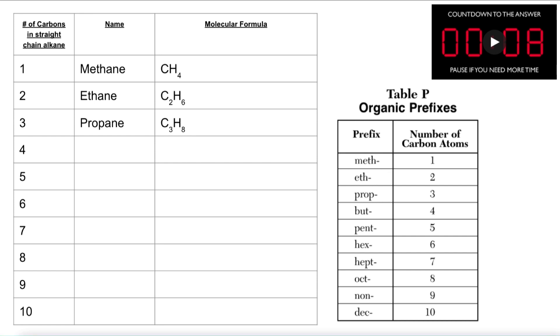I would like you to take a look at the organic prefixes table and think about what the name of each of these alkanes would be as well as how many carbon atoms would be in each alkane. Take 30 seconds to use the model for methane, ethane, and propane. Try to fill in the rest of the alkanes. Pause the video if you need more time.